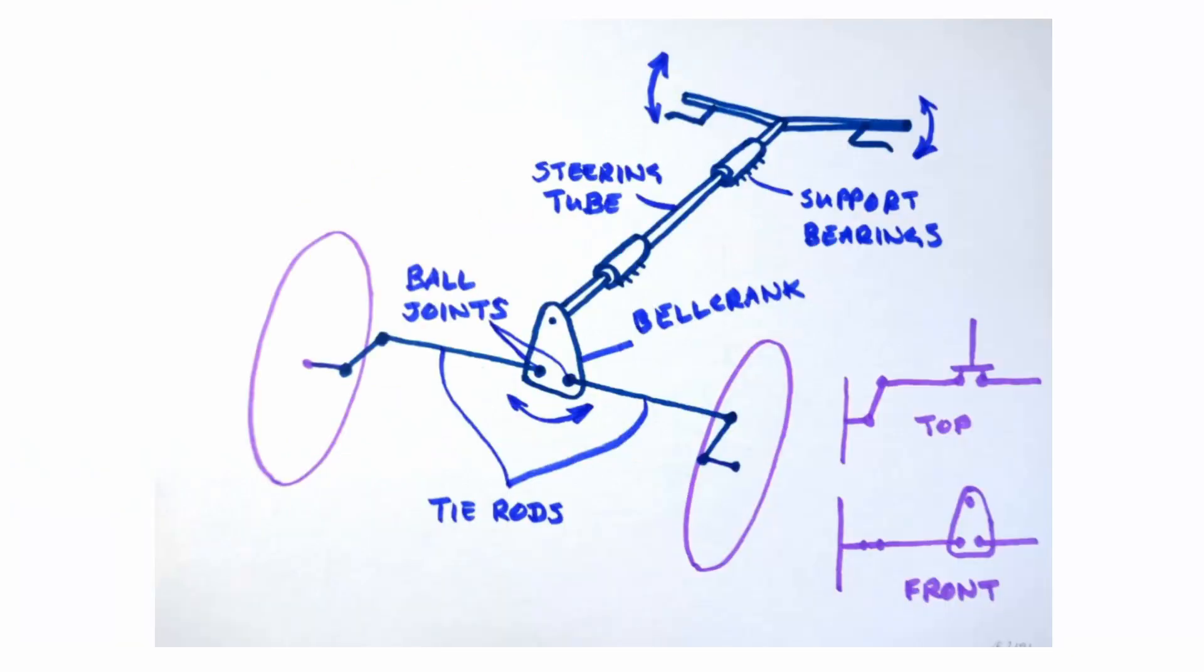For a tilting vehicle the mechanism we are most likely to use is this one which features a bell crank attached to the handlebars or steering wheel in some way which actuates the steered wheels via tie rods fitted with ball and socket joints. The tie rods need to have opposed threads at the ends to enable the wheel alignment to be adjusted.